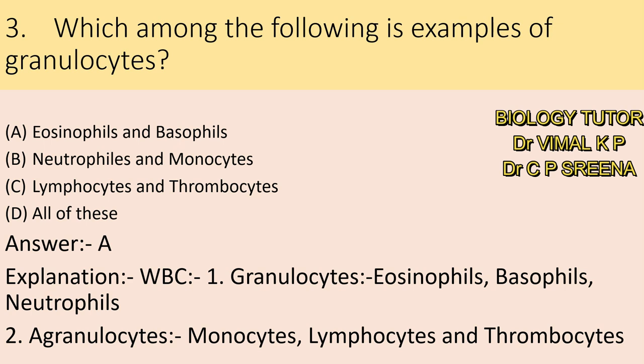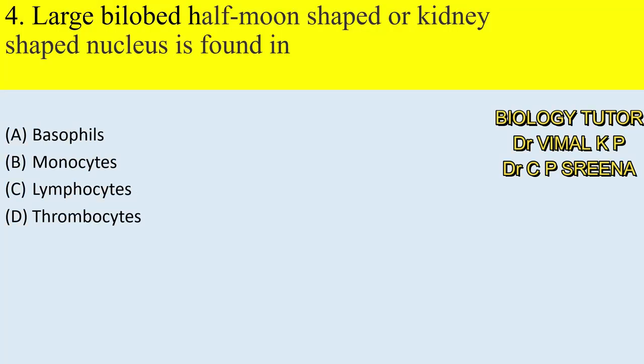You should remember these points for your exams. Fourth question: a large bilobed, half-moon shaped or kidney-shaped nucleus is found in — A. Basophils, B. Monocytes, C. Lymphocytes, D. Thrombocytes. Here answer is B — Monocytes. A large bilobed, half-moon shaped or kidney-shaped nucleus is found in monocytes.